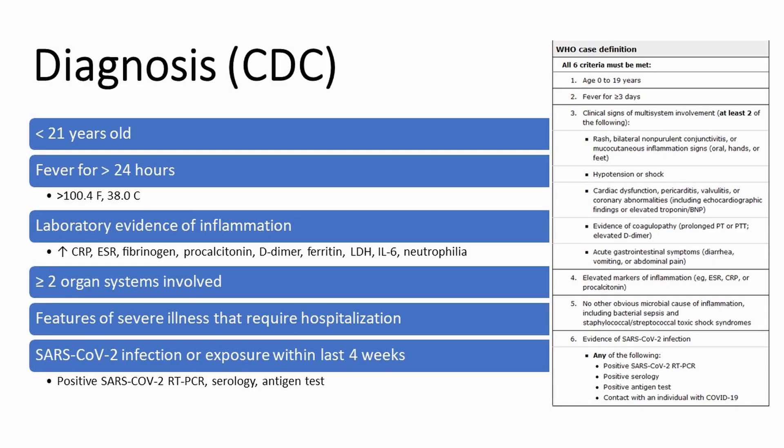The CDC defines MIS-C patients as less than 21 years old, having had fever for more than 24 hours, and having elevated laboratory evidence of inflammation — including increased CRP, ESR, fibrinogen, procalcitonin, D-dimer, ferritin, LDH, IL-6, neutrophilia, etc. Also important is that at least two organ systems are involved, patients have features of severe illness requiring hospitalization, and they've had a SARS-CoV-2 infection or exposure within the last four weeks — confirmed by positive RT-PCR, serology, or antigen test.